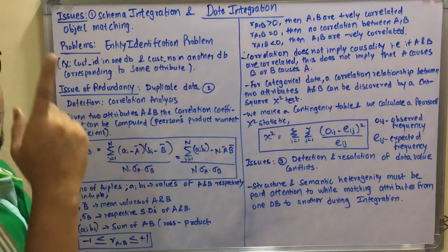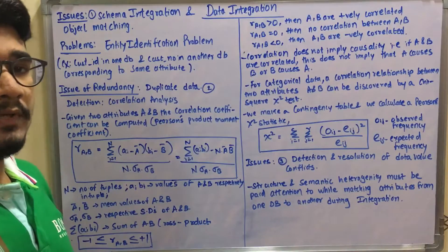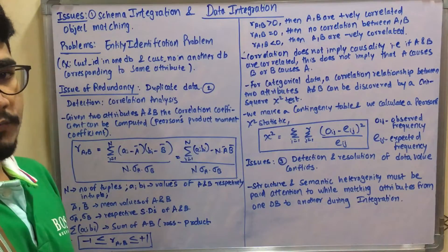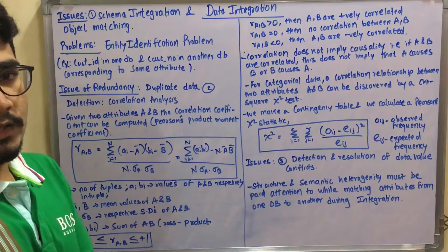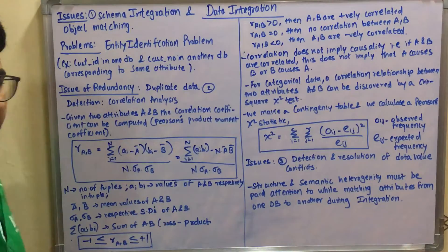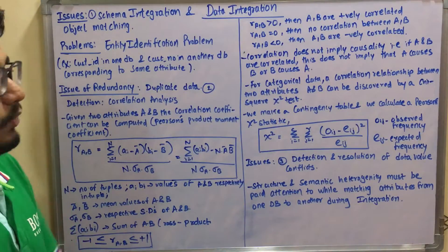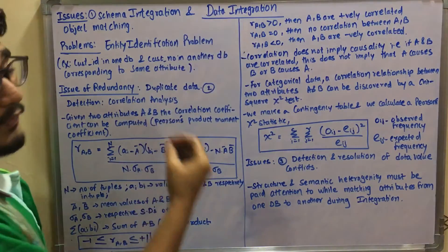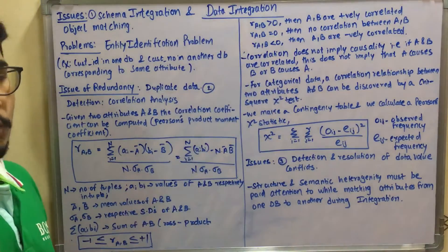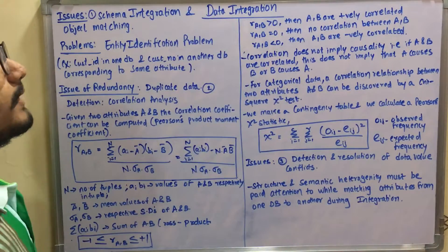If r_AB is greater than zero, then A and B attributes are positively correlated, meaning there are some issues with closer objects. If r_AB equals zero, there is no correlation between attributes A and B.